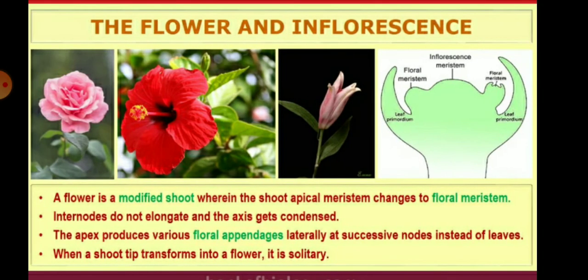The flower means the modified shoot, wherein the shoot apical meristem changes to floral meristem. The internodes do not elongate and the axis gets condensed, so that the apex produces various floral appendages laterally at successive nodes instead of leaves. When a shoot tip transforms into a flower, it is solitary.